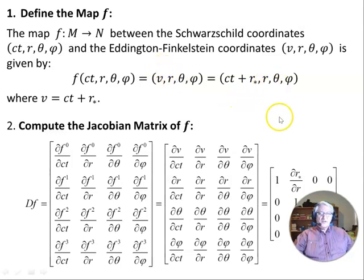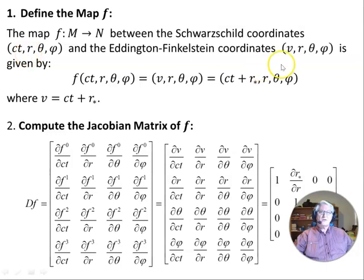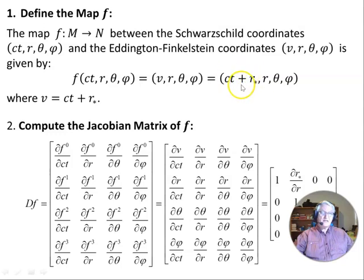In order to use the push forward, we define the map f from manifold M, the Schwarzschild case, to manifold N, the Eddington-Finkelstein coordinate system. So f takes coordinates in M and maps them to N. f of (ct, r, θ, φ) gives us (v, r, θ, φ), with component functions f⁰ = ct + r★, f¹ = r, f² = θ, f³ = φ, where v equals ct + r★ and r★ is the tortoise coordinate.